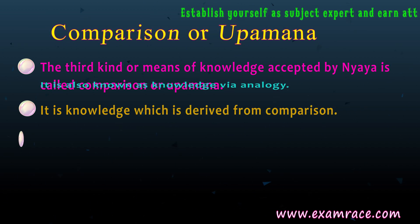Shabda or Verbal Testimony is an independent source or means of knowledge according to the Nyaya school. According to Nyaya epistemology, Shabda is the fourth and the last accepted pramana by the school. According to them, Shabda is a pramana when it comes from a trustworthy person. The statements which follow from a reliable, trustworthy person are called Aptavakya. A sentence is a collection of words, and words have the potency or the power in them to convey meanings.